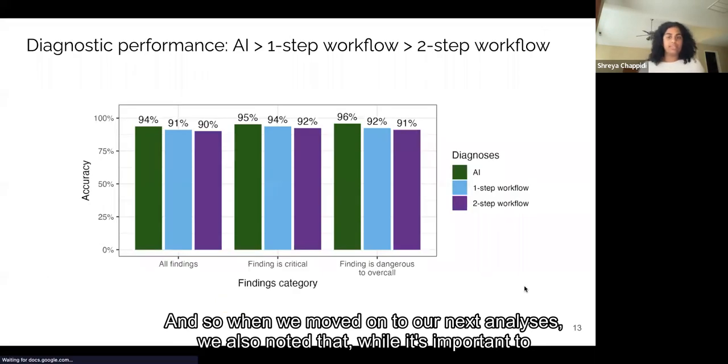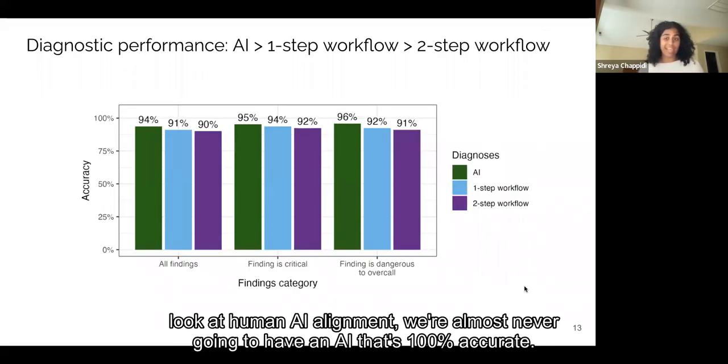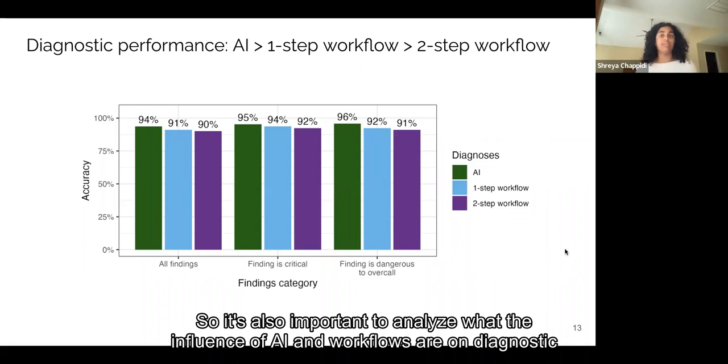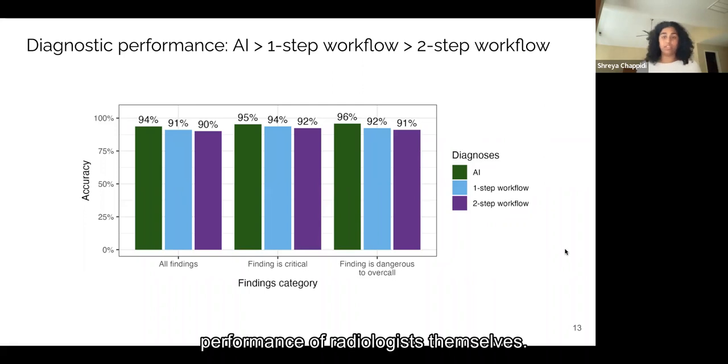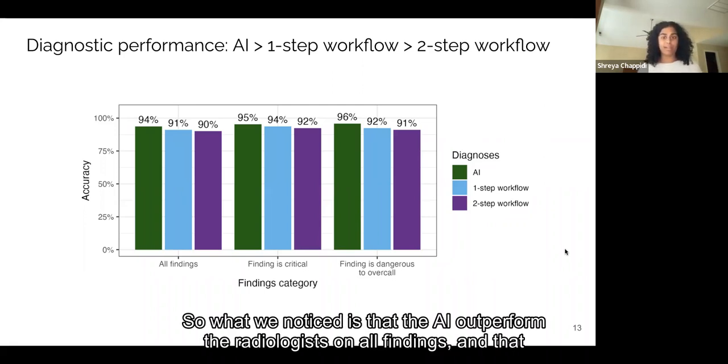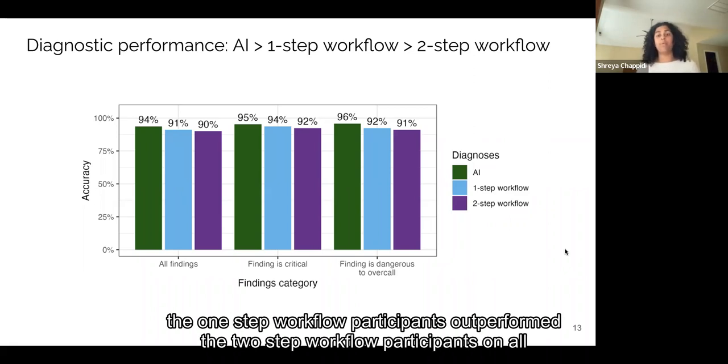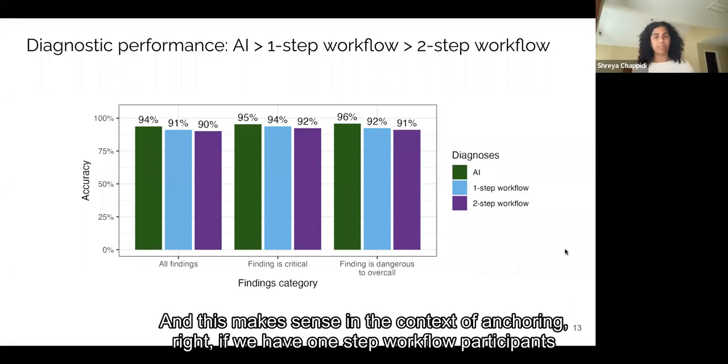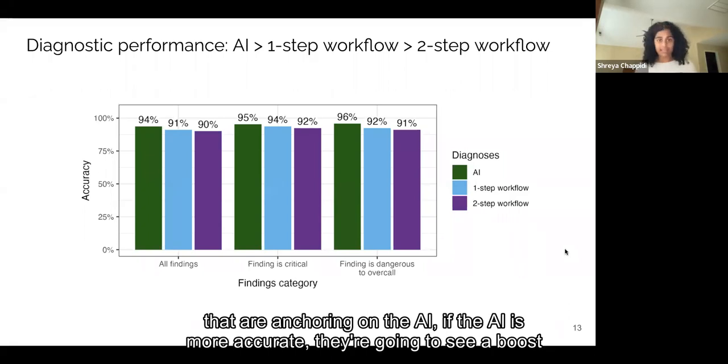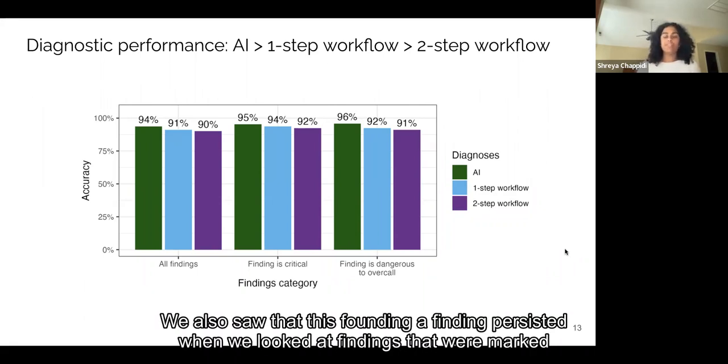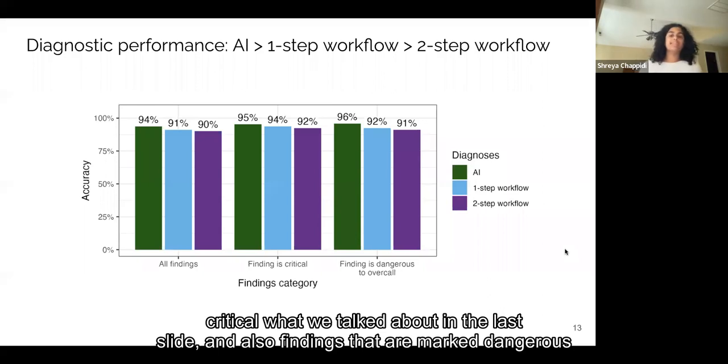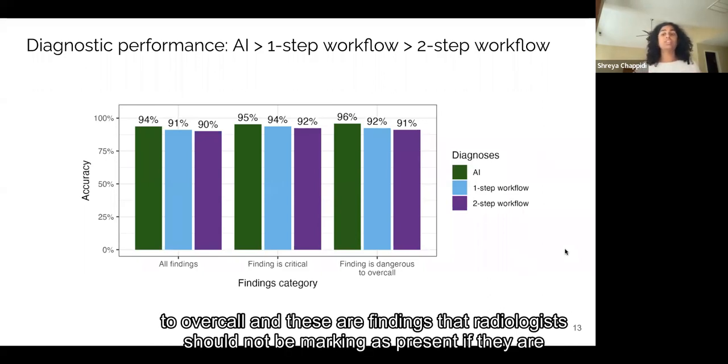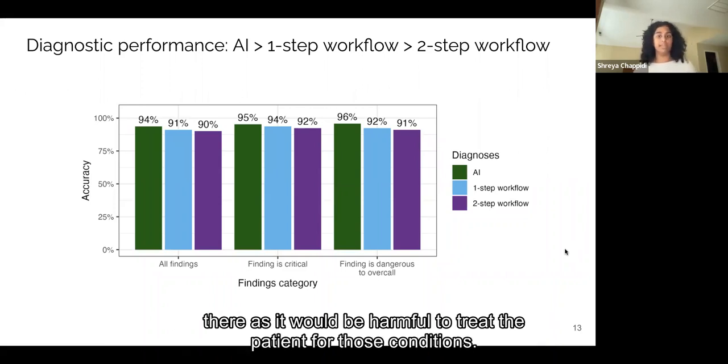And so when we moved on to our next analyses, we also noted that while it's important to look at human AI alignment, we're almost never going to have an AI that's 100% accurate. So it's also important to analyze what the influence of AI and workflows are on diagnostic performance of radiologists themselves. So what we noticed is that the AI outperformed the radiologists on all findings and that the one-step workflow participants outperformed the two-step workflow participants on all findings as well. And this makes sense in the context of anchoring, right? If we have one-step workflow participants that are anchoring on the AI, if the AI is more accurate, they're going to see a boost in accuracy. We also saw that this finding persisted when we looked at findings that were marked critical, what we talked about in the last slide, and also findings that are marked dangerous to over-call. And these are findings that radiologists should not be marking as present if they are there, as it would be harmful to treat the patient for those conditions.